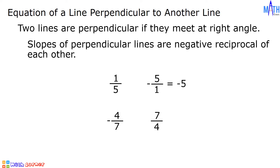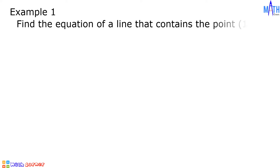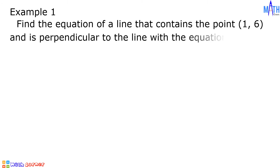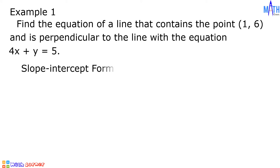Let us have some examples. Example number 1: let us find the equation of a line that contains the point (1, 6) and is perpendicular to the line with the equation 4x plus y equals 5. Our first step, we will express 4x plus y equals 5 in slope-intercept form y equals mx plus b.